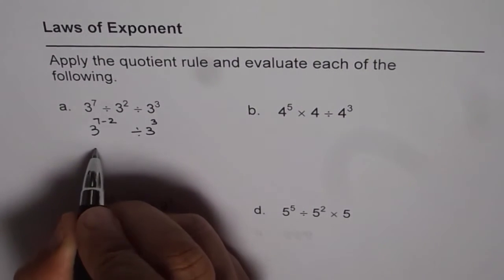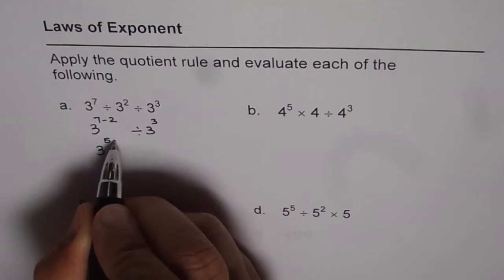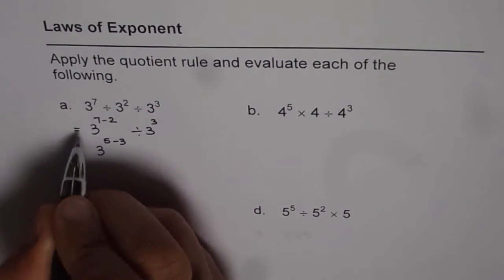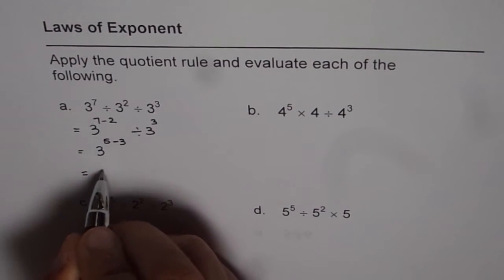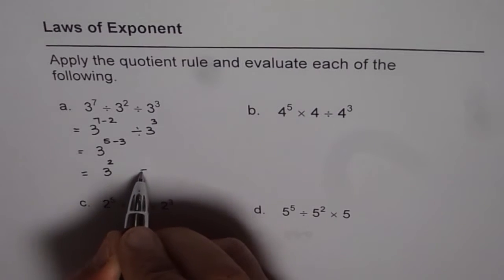So that gives us 3 to the power of 5 and divide by 3 to the power of 3 will give us 5 minus 3. So this is equal to 3 to the power of 5 minus 3 is 2 which is 9.